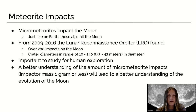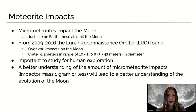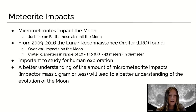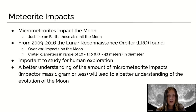A little background on meteor impacts: micrometeorites impact the moon just like on Earth. From 2009 to 2016, the Lunar Reconnaissance Orbiter found over 200 impacts on the moon, with crater diameters ranging from 10 to 140 feet in diameter, roughly 3 to 43 meters. They're important to study for human exploration, and they also provide a better understanding of the amount of micrometeor impacts, which will lead to a better understanding of the evolution of the moon.